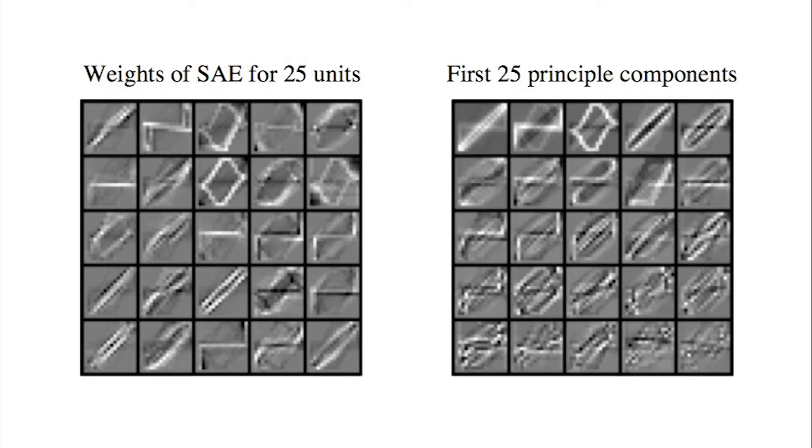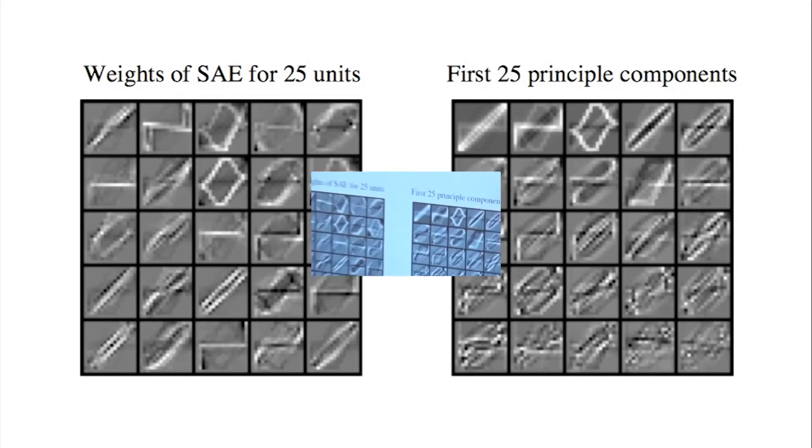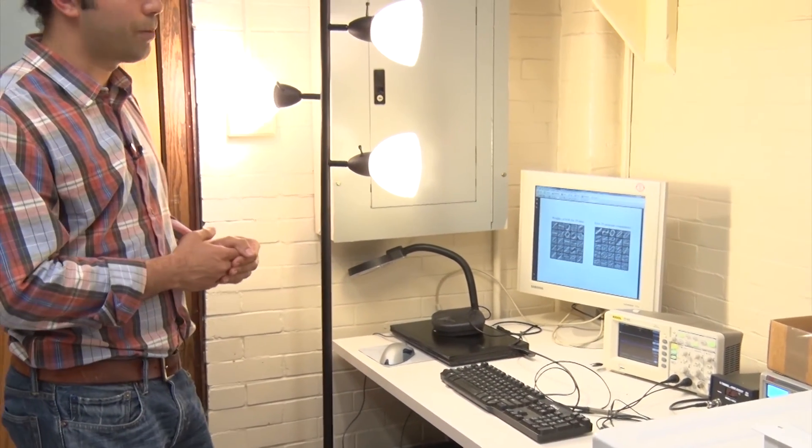Some of these correspond to microwaves, some of these correspond to refrigerators, some of these correspond to lamps, and it's already automatically training itself on what features are the right ones to focus on in order to solve this appliance identification problem.